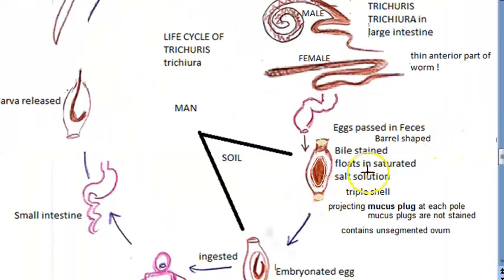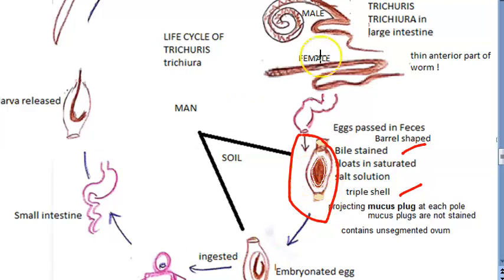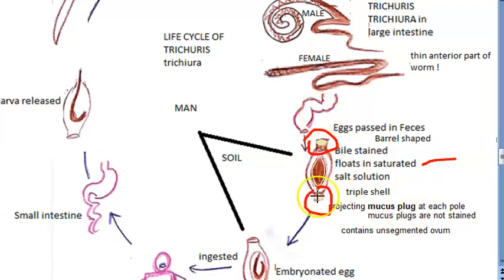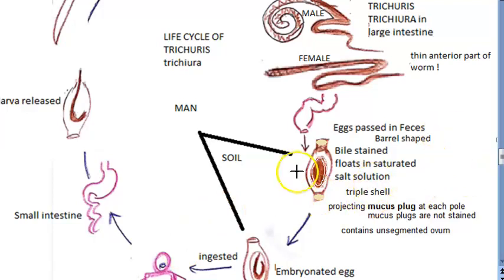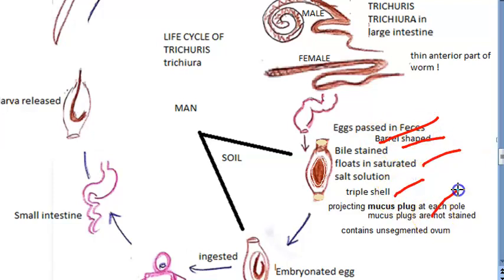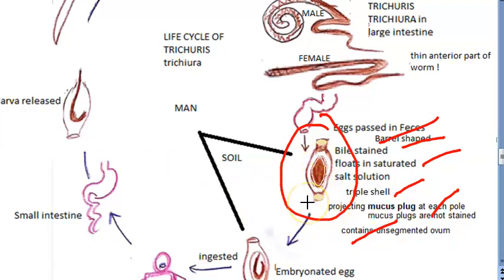The eggs are barrel-shaped, bile-stained, and have a triple shell — three layers. They float in saturated salt solution and have projecting mucus plugs at each pole; these mucus plugs do not pick up any stain. The egg contains an unsegmented ovum. These features are important for stool examination and laboratory diagnosis.